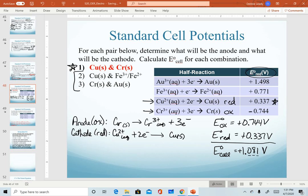I have an overall positive value here that tells me that I have a product favored reaction. So if I combine these two in my galvanic cell, I will generate a voltage. The reaction will run on its own.